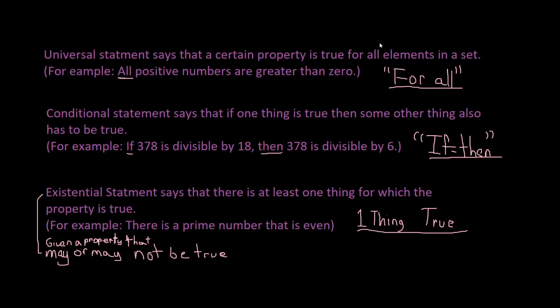Three of the most important kinds of sentences in mathematics are universal statements, conditional statements, and existential statements. A universal statement says that a certain property is true for all elements in a set. For example, all positive numbers are greater than zero.